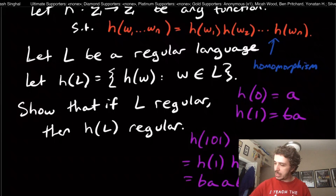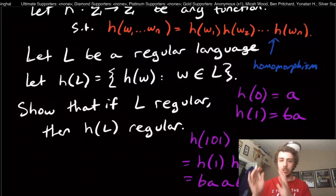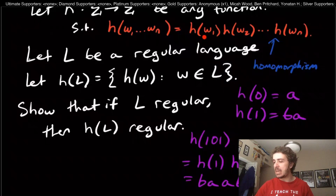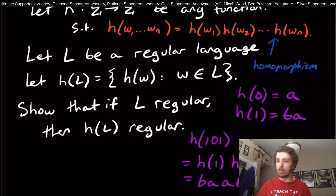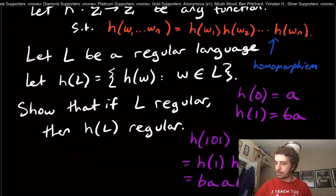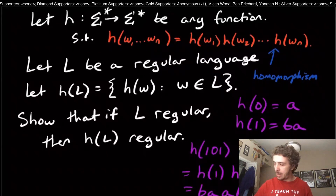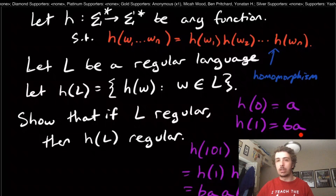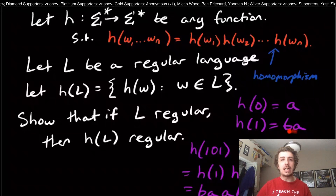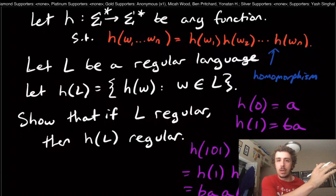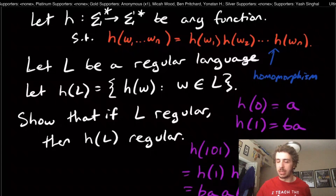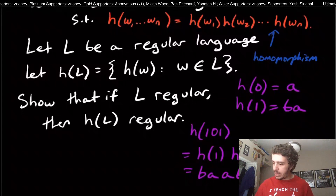Where does this term come from? 'Morphism' just means changing one thing for another, and 'homo' reflects this idea of splitting the string into individual parts. The key thing to keep in mind is that the homomorphism property says that when you apply H to a single character, the result could still be an entire string — it's not one character in, one character out. But we can focus on a single character at a time.